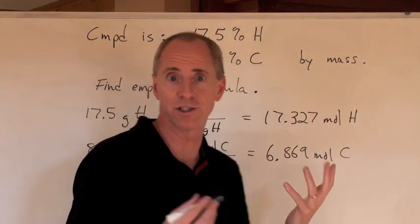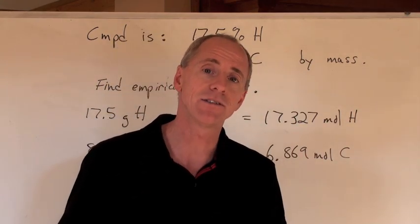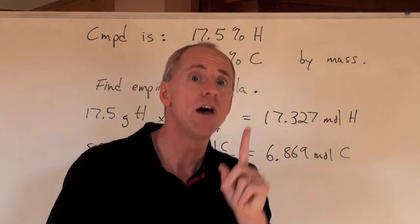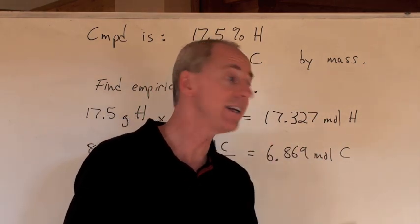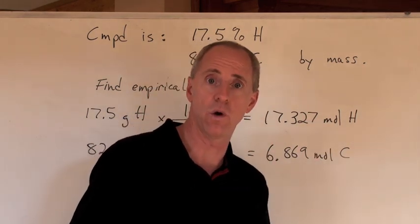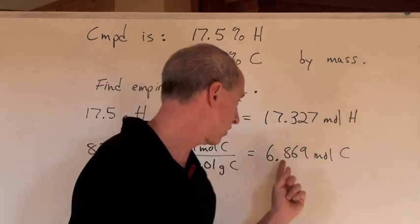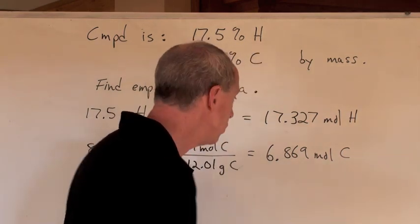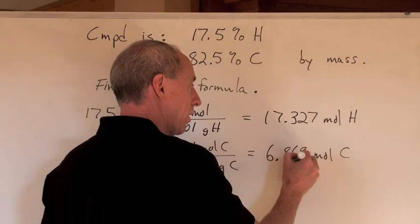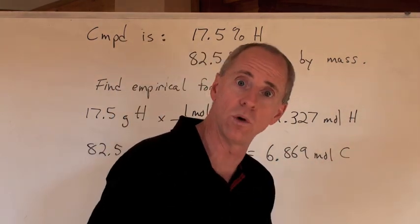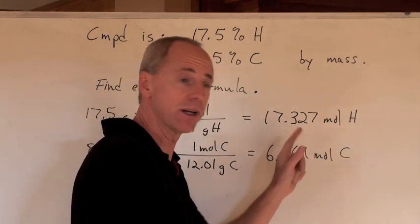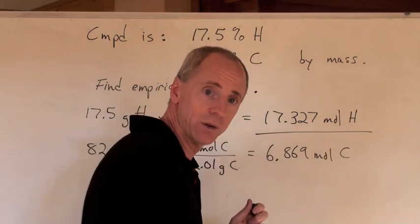After, of course, the percentages just get turned into grams. The next step is to take, now listen, the smallest quantity here and divide it into each one of the quantities. Well, that's 6.869. When you divide 6.869 into 6.869, you get 1. So that's 1 mole of carbon.